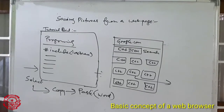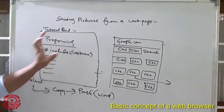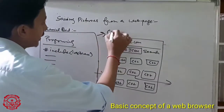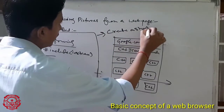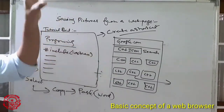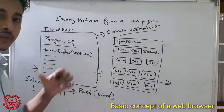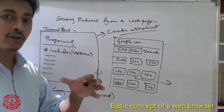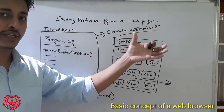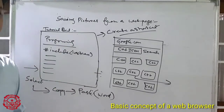Next one is create a shortcut of the current page. For example, this is a Tutorial Point web page and you want to create a shortcut of it. Just right-click on this particular web page and select shortcut. That's a very easy process — you will create a shortcut on your desktop, and when you click on this shortcut on the desktop, you will directly go to that web page.